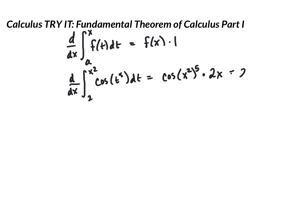We could clean this up a little bit and say it's 2x times the cosine of x to the 10th. But that is the fundamental theorem, part 1. We're finding the derivative of the integral, which eliminates the integral piece, but then the bound would be substituted in and we'd multiply by the derivative of the bound.